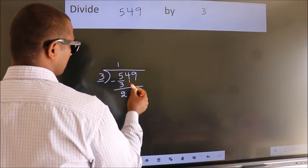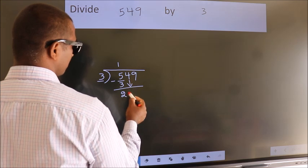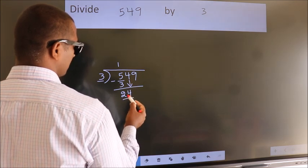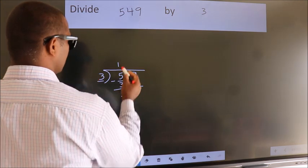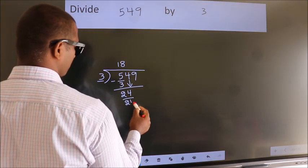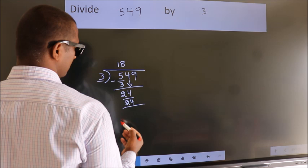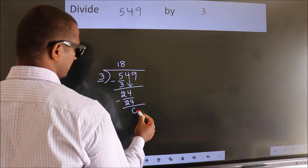After this, bring down the beside number, so 4 down, so 24. When do we get 24? In the 3 table, 3 8s, 24. Now we subtract, we get 0.